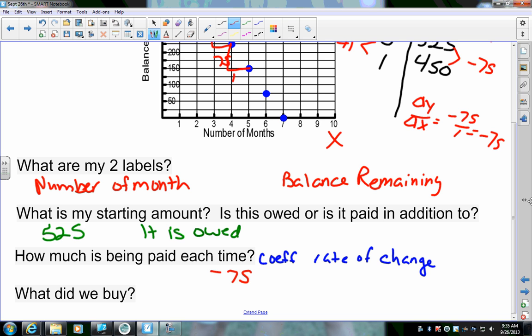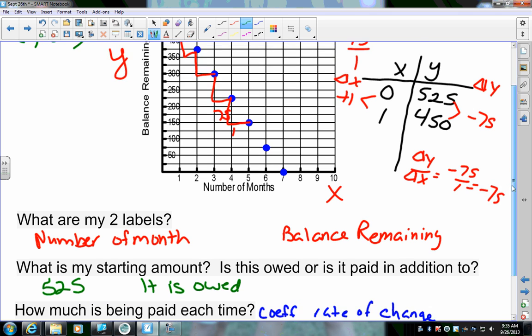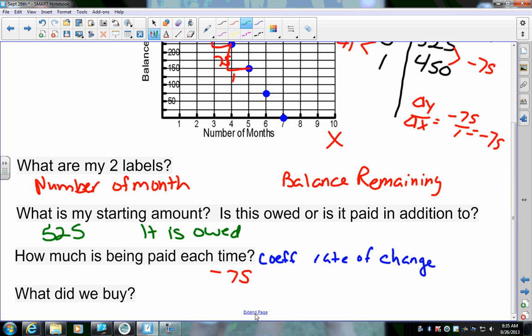Now, the next question says, what did we buy? It says, you know, I look up here at the graph and it tells me balance, balance remaining in number of months. It says we're starting at 525 and subtracting off 75. So, if we were to make up a word problem, what could we buy for $525? A TV? An iPhone? Shoes? Who's buying shoes for $525? Oh, okay. Well, I've got to hang out with y'all. If you have $525 to be able to buy shoes.